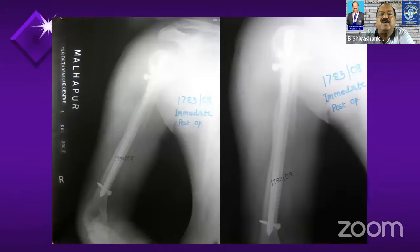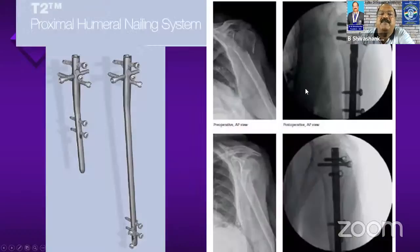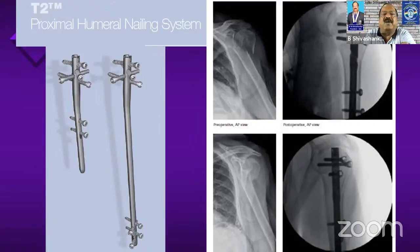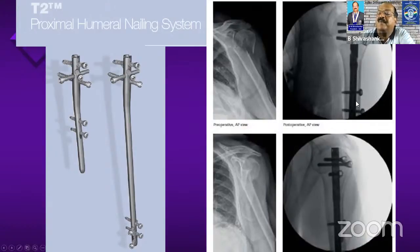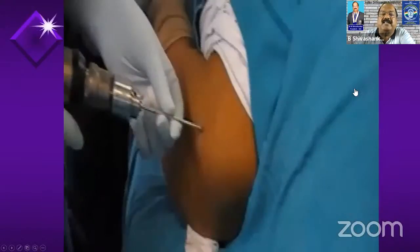These are the post-operative pictures showing that the entry is from the top and there is no varus malformation. All the newer nails available have got multi-locking proximally and a more or less straight shape, requiring entry through the articular surface. We should not be worried about taking entry from the articular surface — the only thing is we should ensure the tip of the nail does not project out of the articular surface.